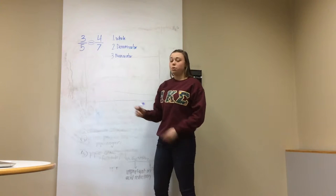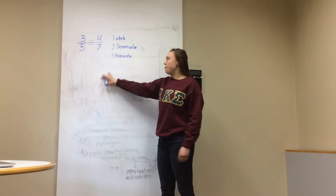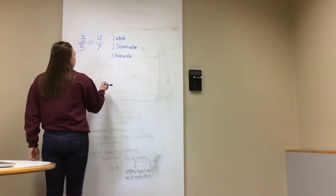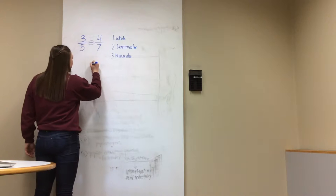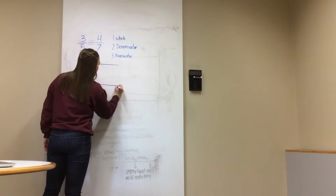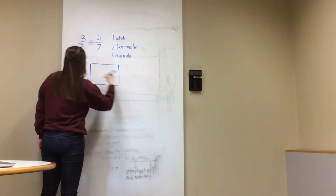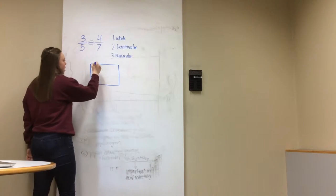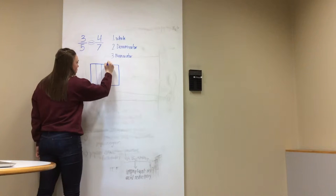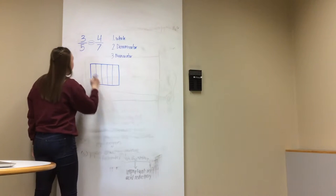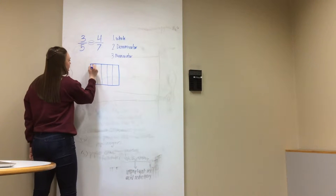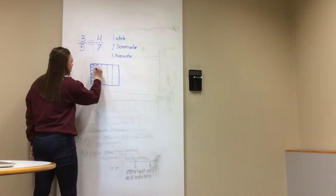Next we're going to draw a picture to represent 3 fifths minus 4 sevenths. First we'll draw the 3 fifths. So we have our whole, and because our denominator is 5, we're going to divide it into 5 pieces. And since we have 3 out of those 5 pieces, we'll shade in 3 of the 5.